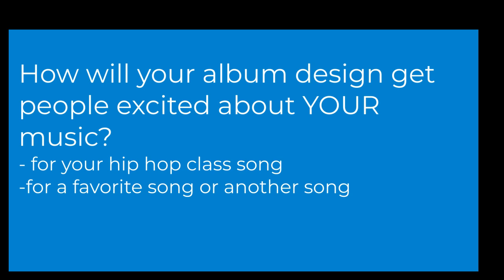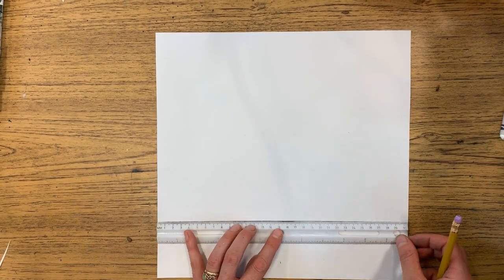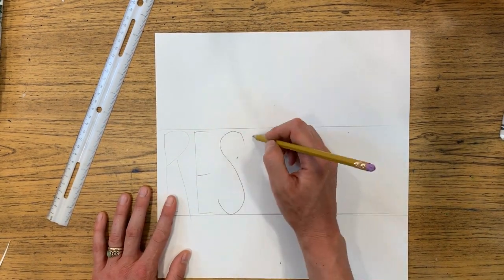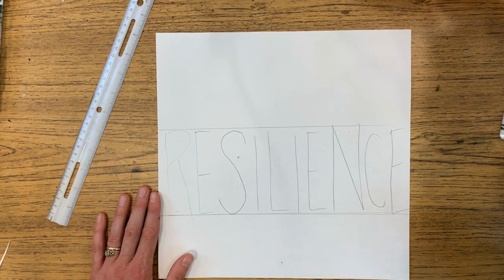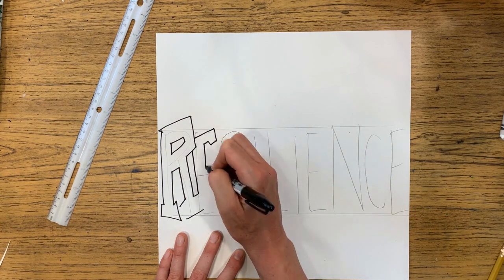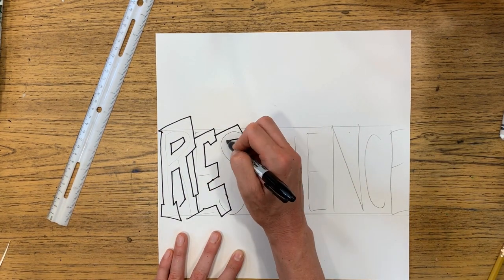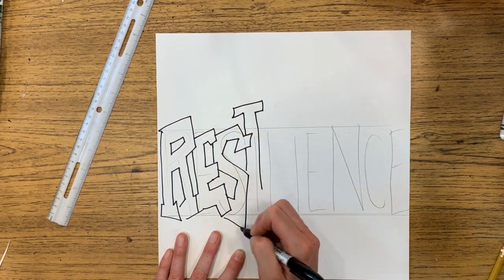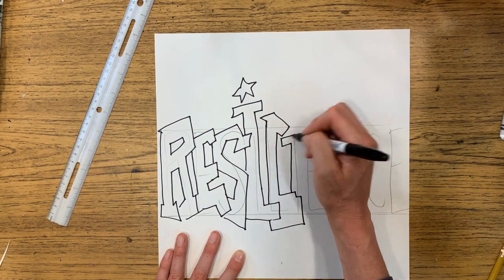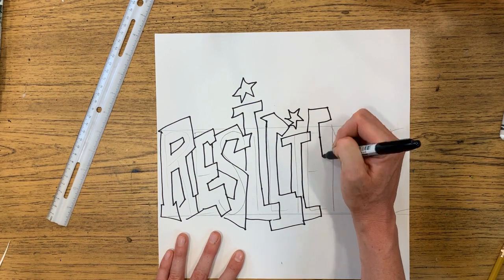How will your album design get people excited about your music? You can design your album cover for your hip hop class song, or for another song that you've written, or for a favorite song that you have. I started by drawing two lines to make my letters. Then I wrote my capital letters tall between the two lines. Then I turned these letters into block letters and chose to add some street style with some bumps and some funk. I'll include some street style alphabets in the lesson plan slideshow if you'd like to see those for inspiration. It's up to you whether you do street style on your album cover or not — this is just to give you some different ideas.